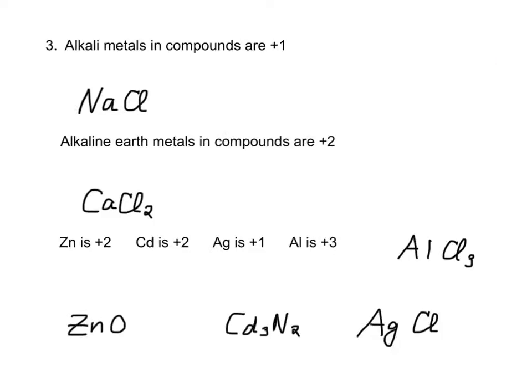The third rule is when I have an alkaline metal in a compound, the alkaline metal is +1. So this sodium has an oxidation number of +1. You'll note that I'm always writing the oxidation numbers above the element. Alkaline earth metals, when they're in a compound, are +2. So calcium has a +2 oxidation number.